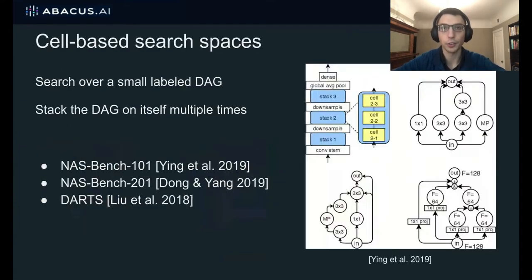This work focuses on cell-based search spaces, which is the most popular type of search space in NAS research today. In a cell-based search space, the actual search happens over a relatively small cell, which is a directed acyclic graph, as in the image on the right. Each node represents one of several operations, such as max pooling or a three-by-three convolution. The goal is to find the best operations and DAG structure, subject to some constraints on the number of nodes and edges. Then to create the full neural network, we stack several copies of the cell on top of one another.